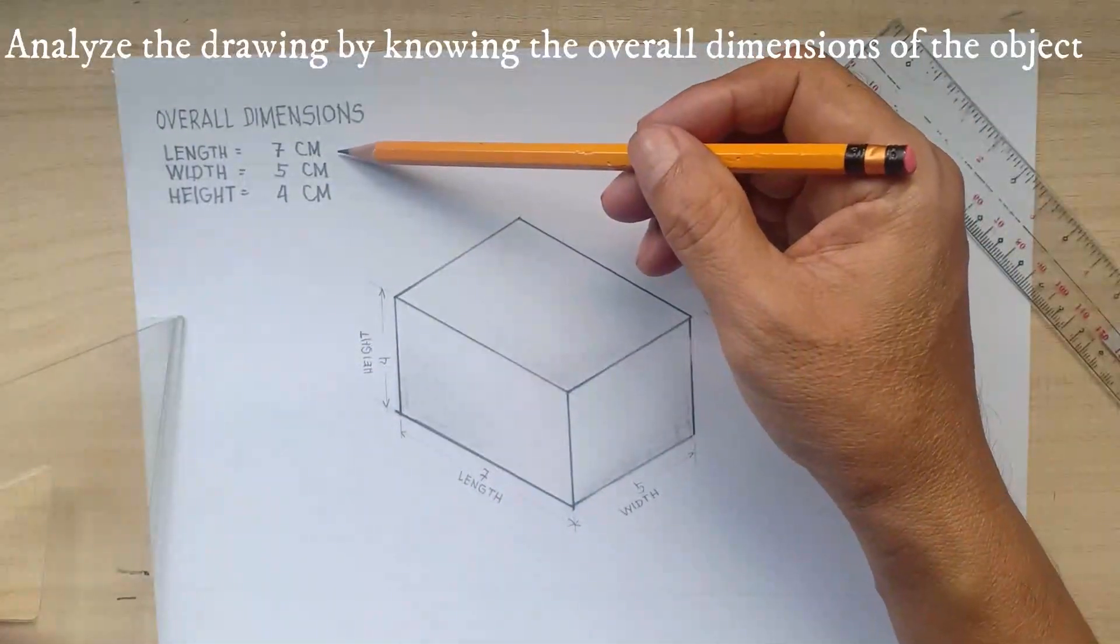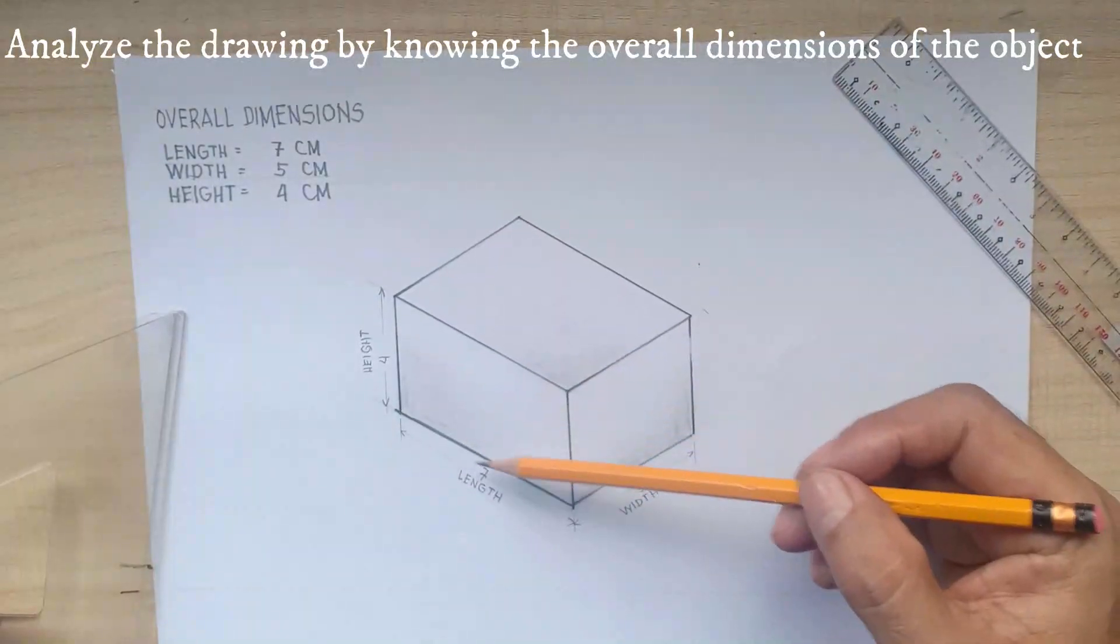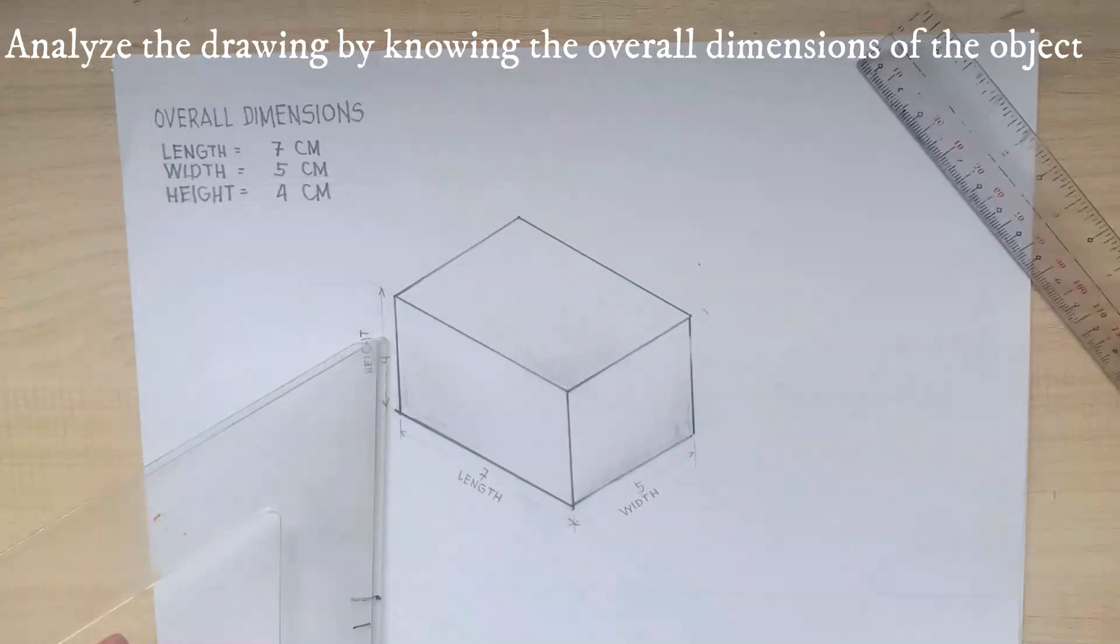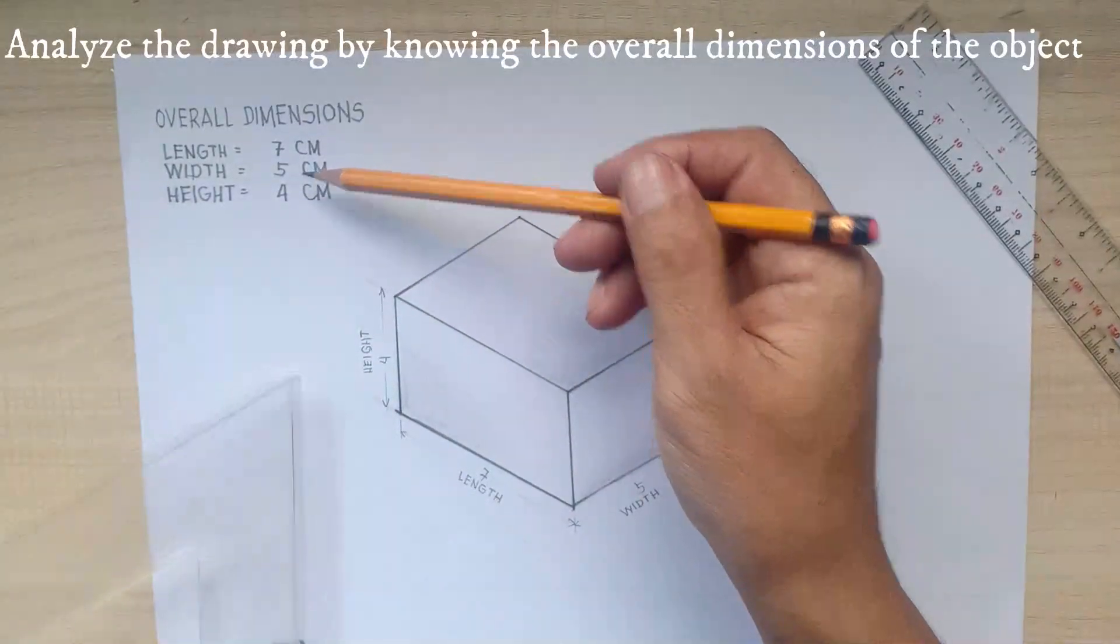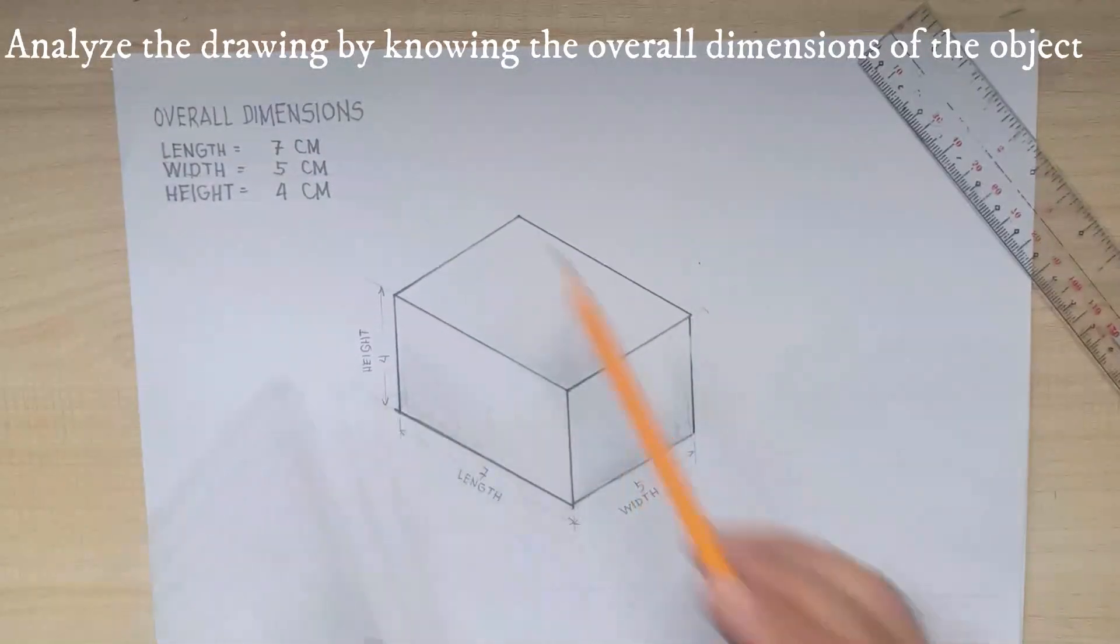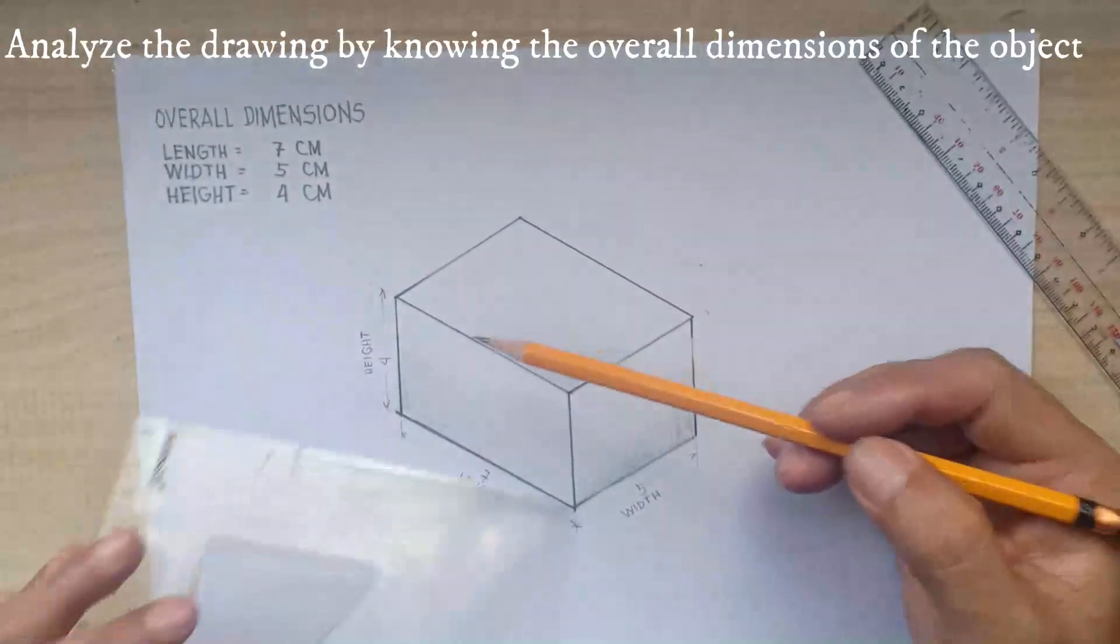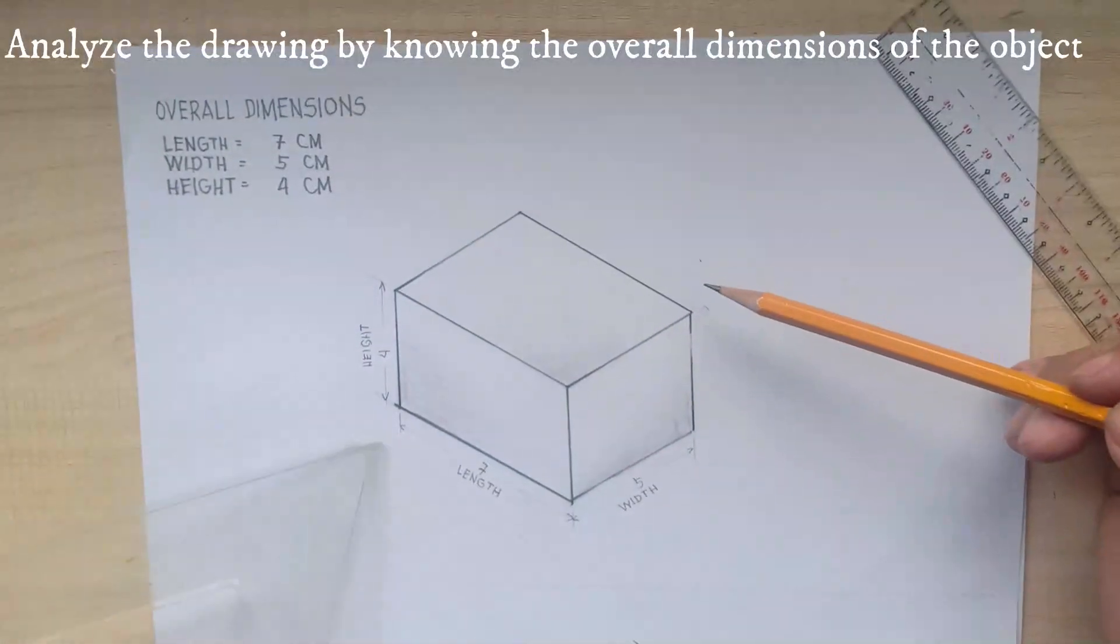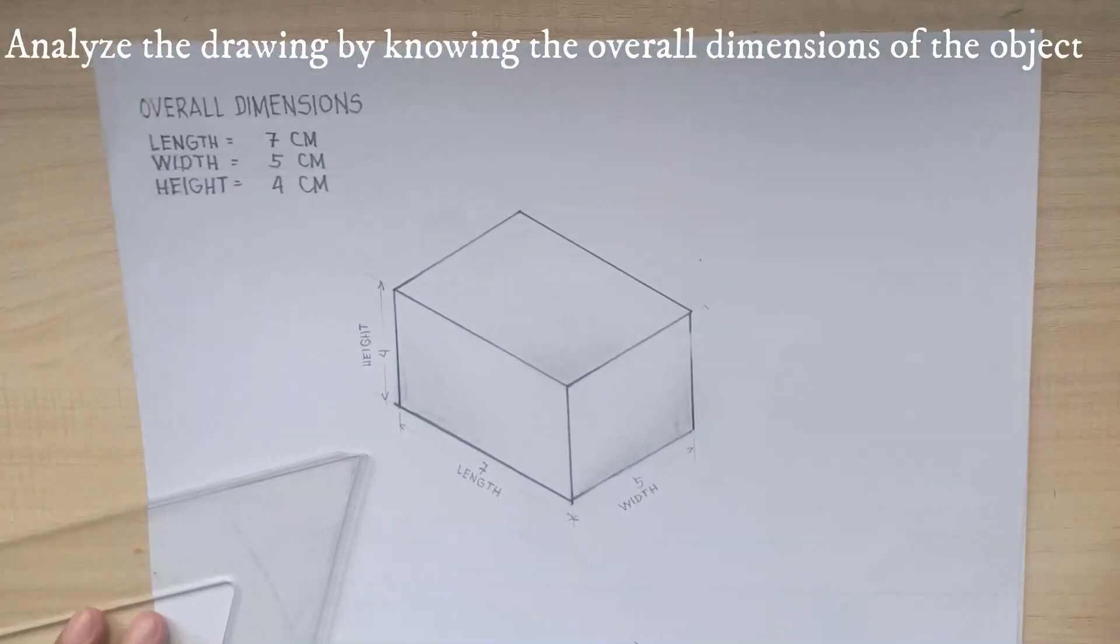The length of the object which is 7 cm is found in front of the object. The width of the object which is 5 cm is found on the right side view of the object. And the height which is 4 cm are the vertical lines of the object.